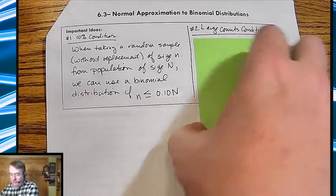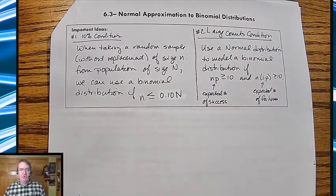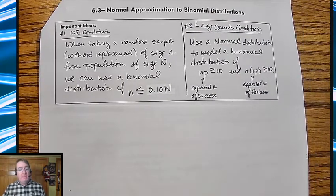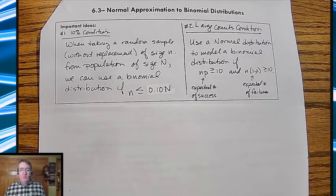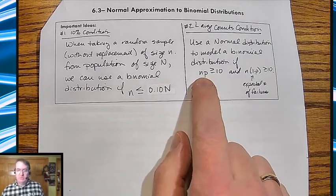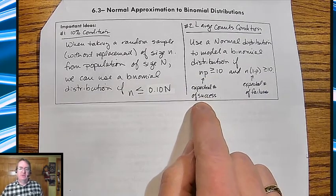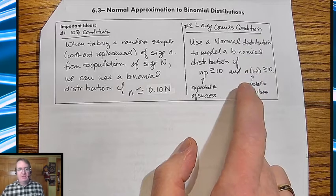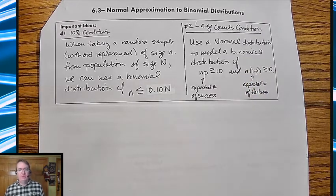Large count rules says you can use a normal distribution to model a binomial distribution if N times P is bigger than 10, so that's the expected number of successes, and then the number of failures, which is N times 1 minus P, is also bigger than 10.